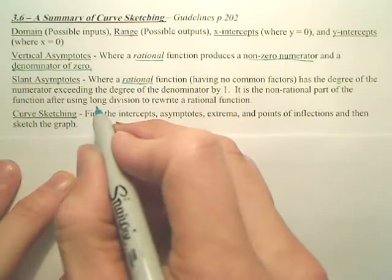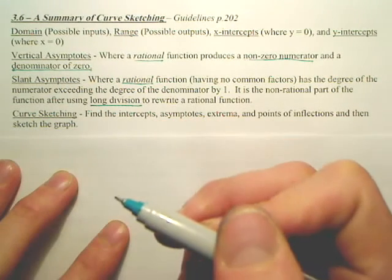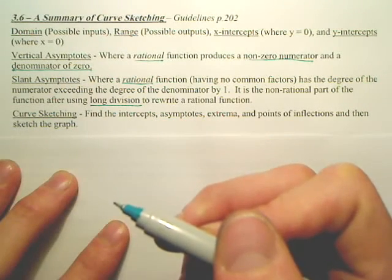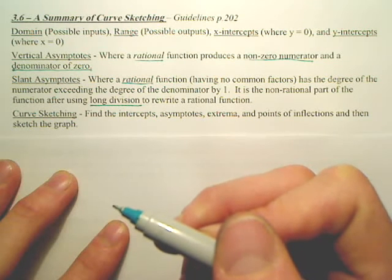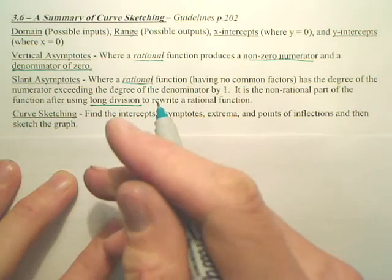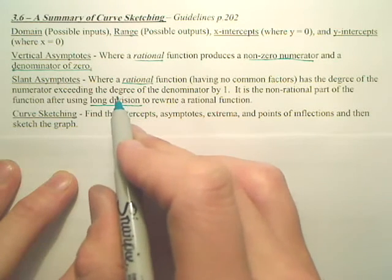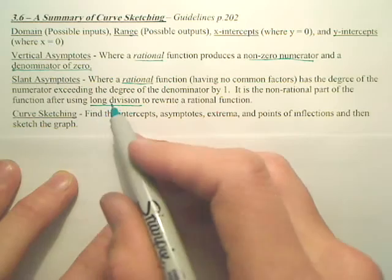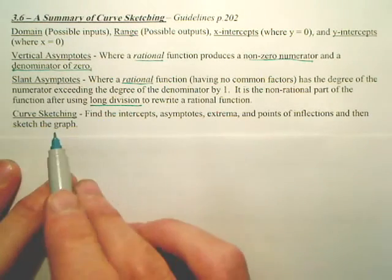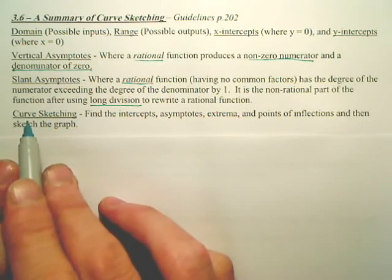It is a non-rational part of the function using long division to rewrite your rational function. Basically, long division is going to come back into play. You're going to take a fraction, long divide it, and the remainder—actually, you'll see, but this is kind of weird. But we're going to deal with asymptotes that are at a slant. Anywho, when you're sketching your curve, these are the major things you want.